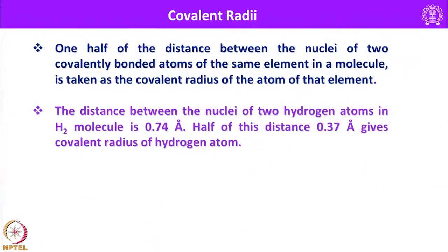Essentially, in a neutral homodiatomic species, the distance between the two nuclei is the covalent diameter and half of that gives you the covalent radius of the individual atoms. The distance between the nuclei of two hydrogen atoms in the H₂ molecule is 0.74 Ångström units; half of this distance, that is 0.37 Ångström unit, gives the covalent radius of the hydrogen atom.